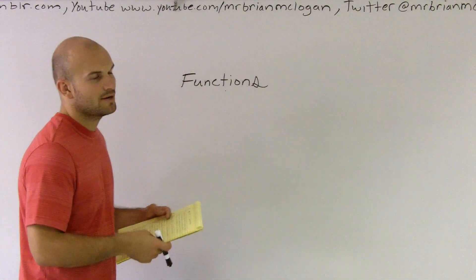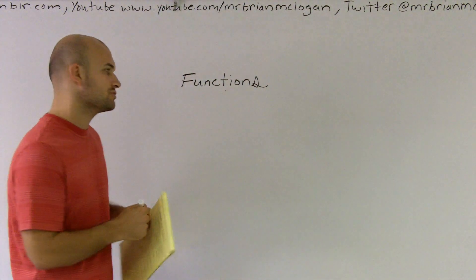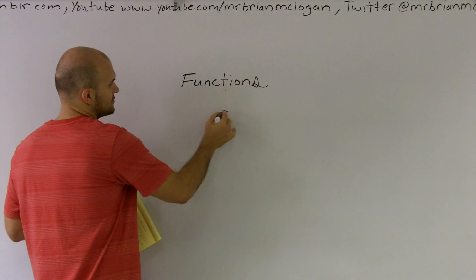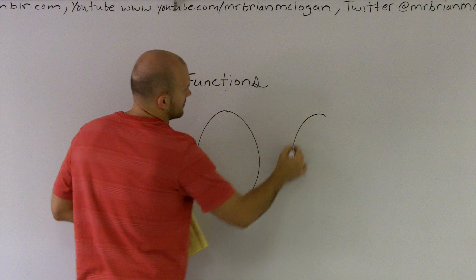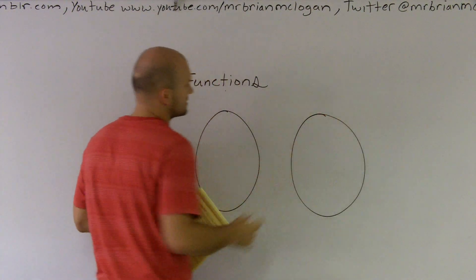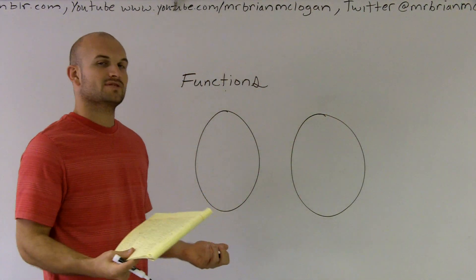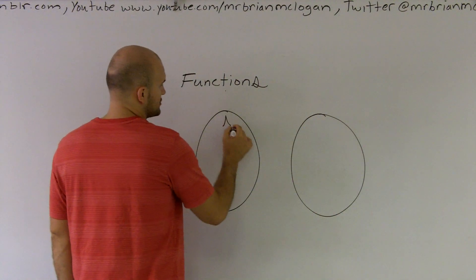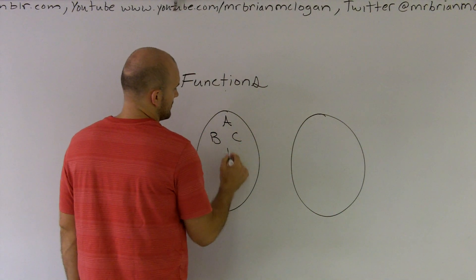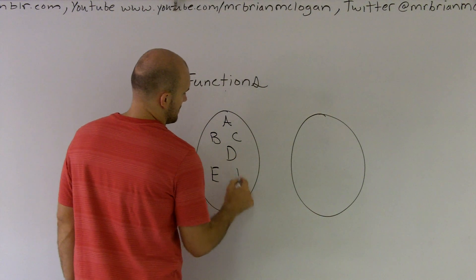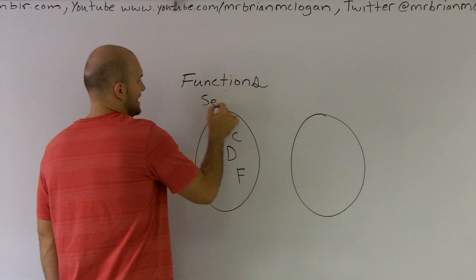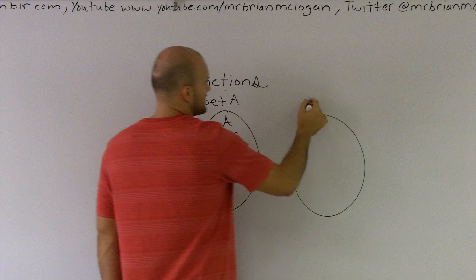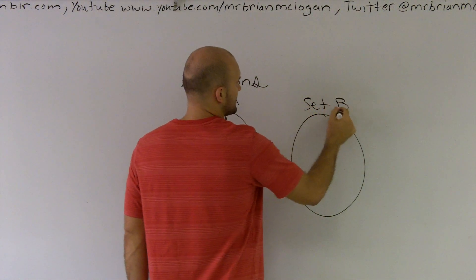A lot of times how we like to represent sets to get a visual appearance is we'll draw two circles. Since a set is a collection of any objects, you can use anything to represent a set. For this video, I'm going to choose letters for Set A and numbers for Set B.